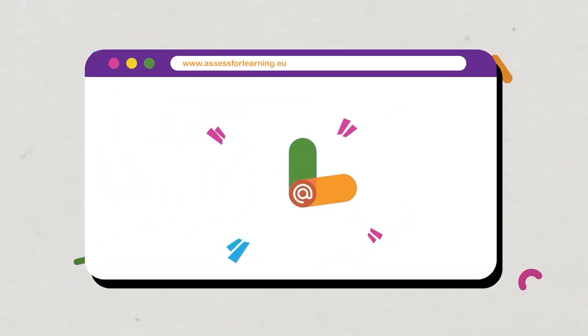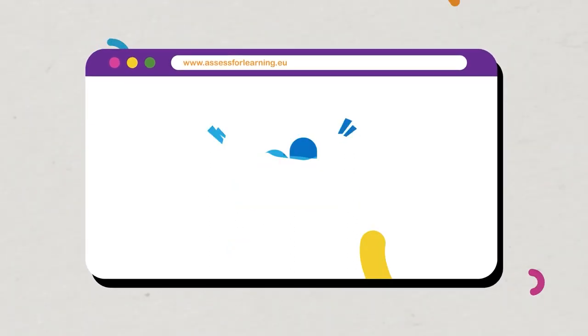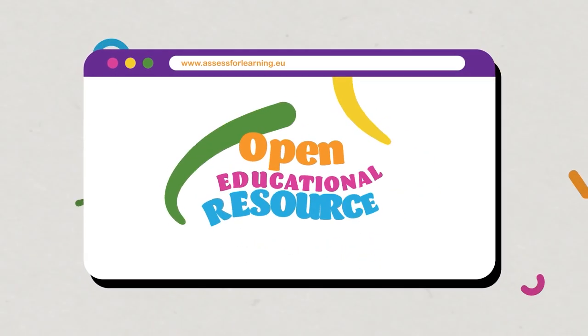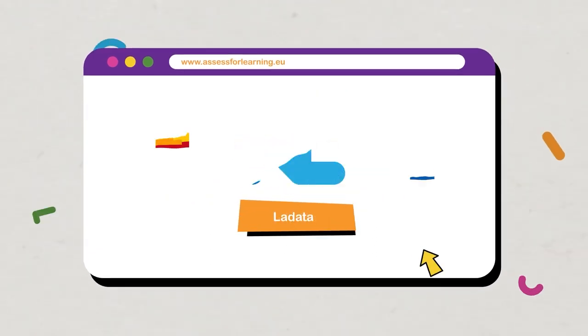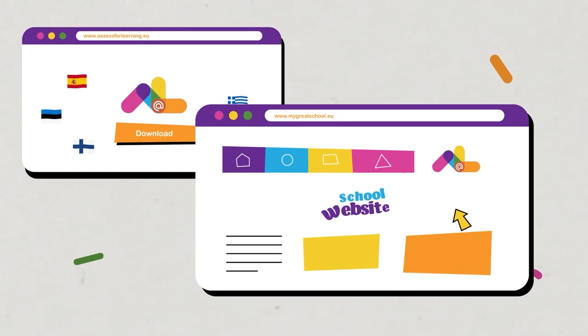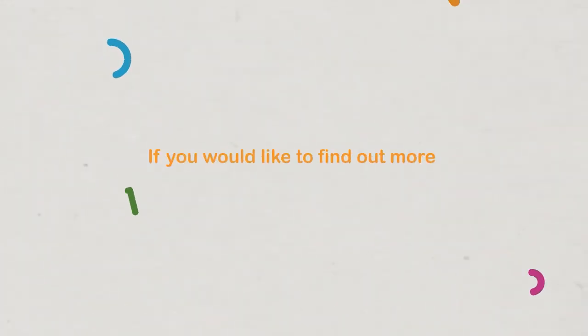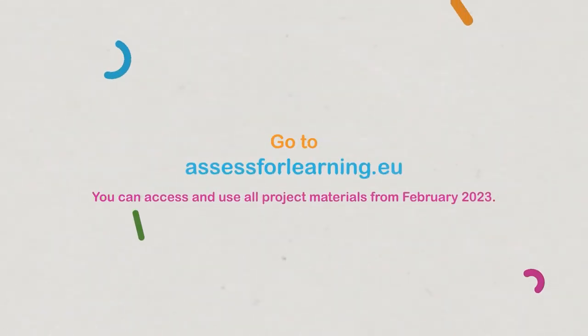The toolkit is now publicly available on our website, but there is more. The toolkit is an open educational resource. You can download it from our website in five languages, put it on your own website and adapt it to your own needs. If you would like to find out more or explore the toolkit, go to assessforlearning.eu.